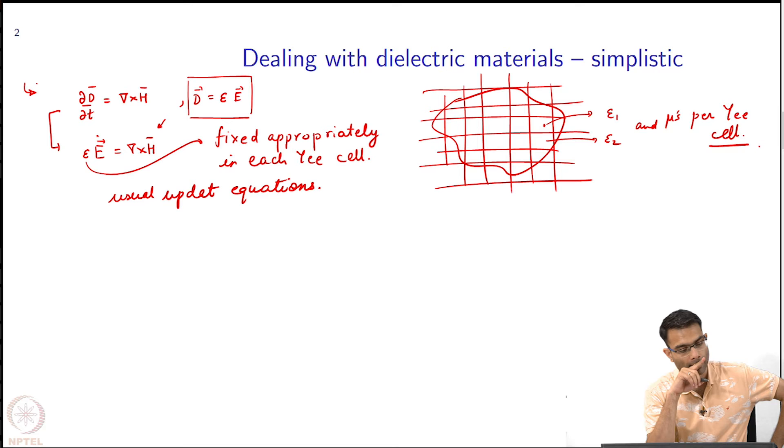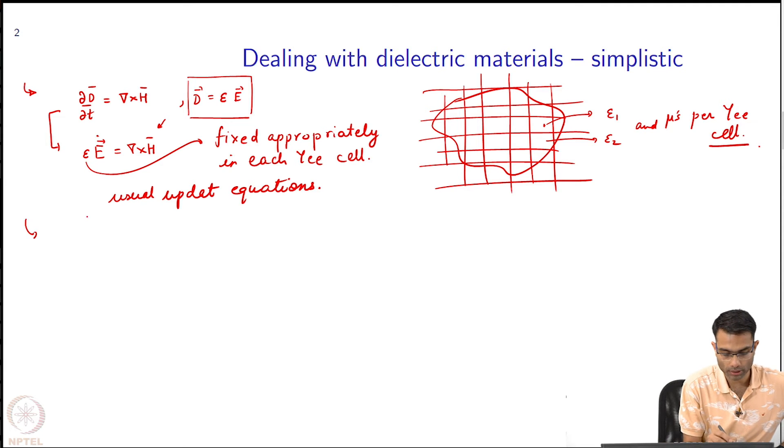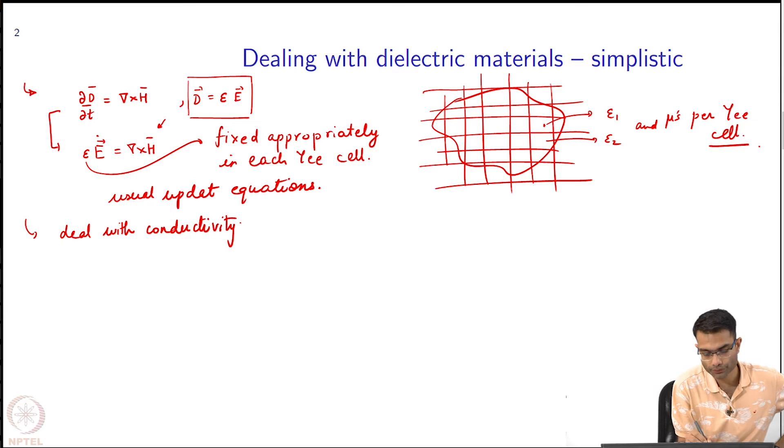Complex permittivity is one thing, but when I do complex permittivity the implicit assumption there is that I am going to expand the fields as in the e to the j omega t form. If I do not want to do that, I want to stay in the time domain, then how do I introduce it? Deal with conductivity first of all.